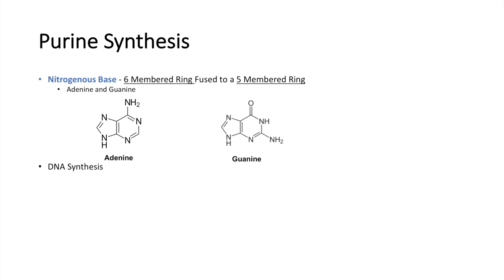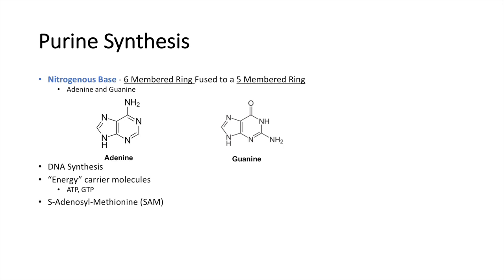So what are purines used for? Purines are used for DNA synthesis. They are also used as energy carrier molecules, such as ATP and GTP, as we all know. They are also used for something very important known as S-adenosylmethionine, or SAM, which is used in some of the biosynthetic pathways for certain hormones.